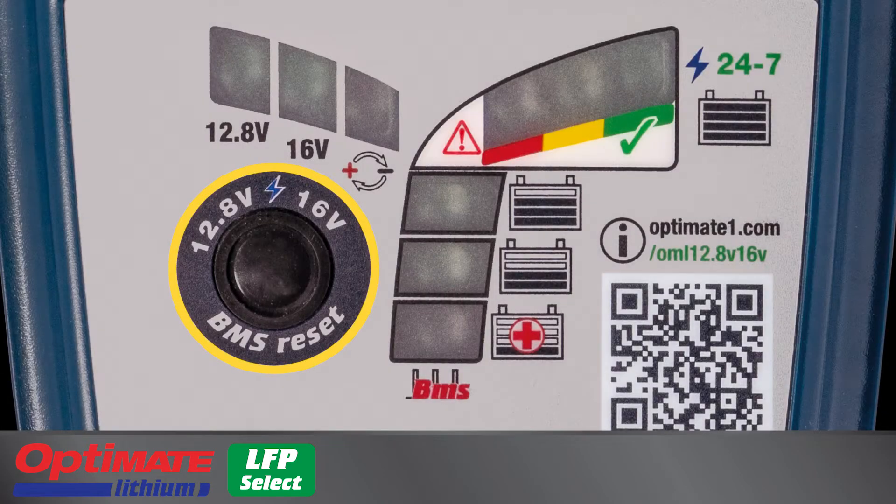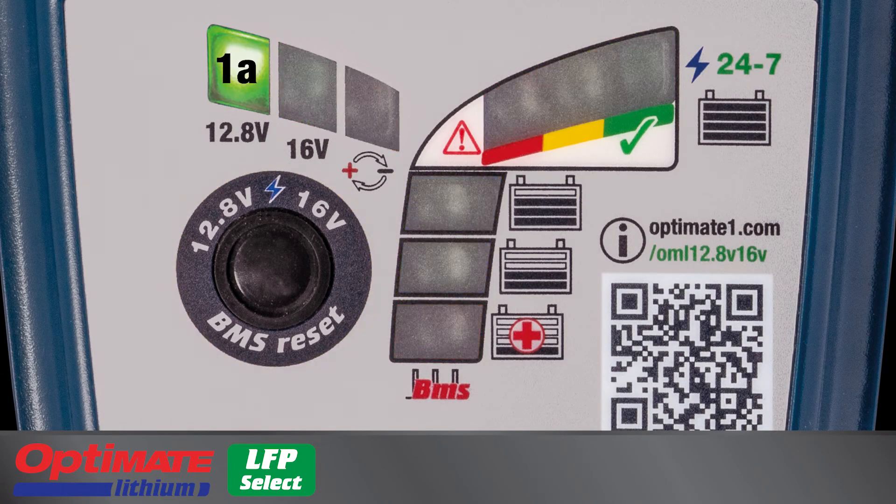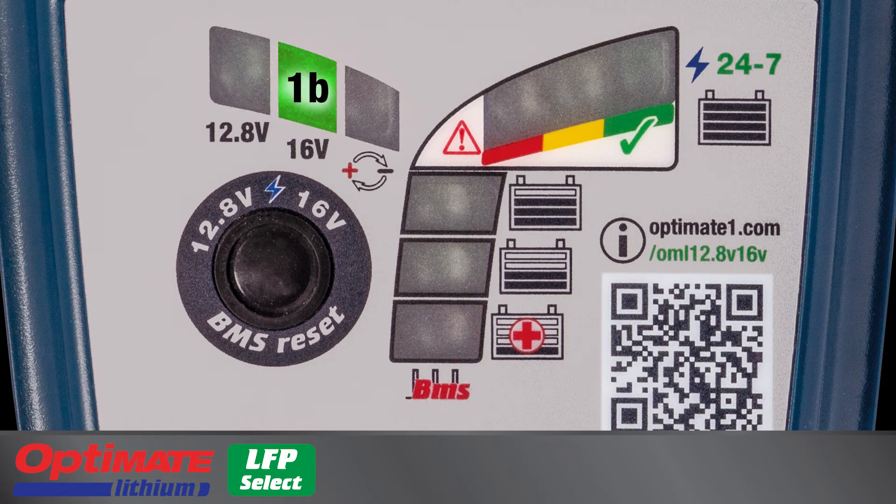The control panel includes a selection button and LED indicators. Lamp 1A or 1B indicate charge voltage selection, and the selected charge voltage indicator lights when OptiMate lithium is connected to AC power.